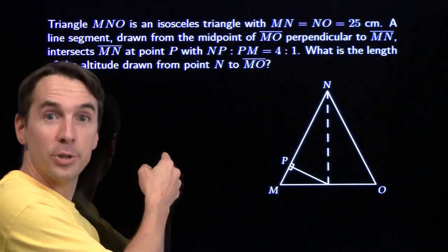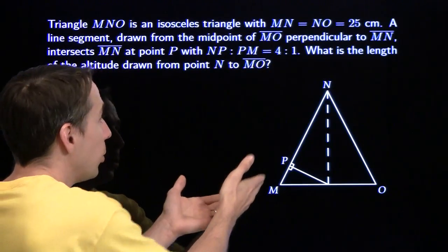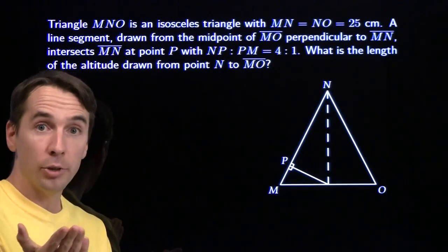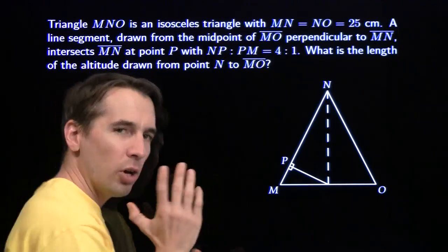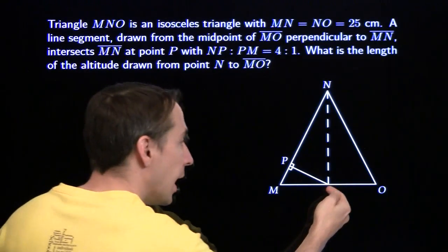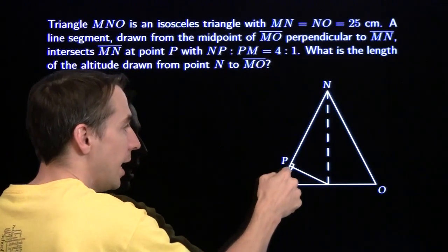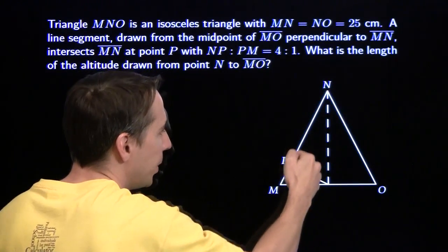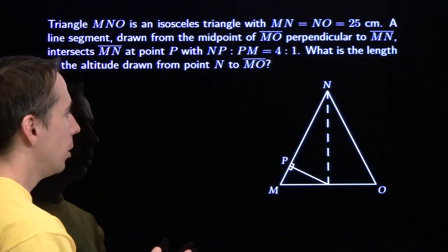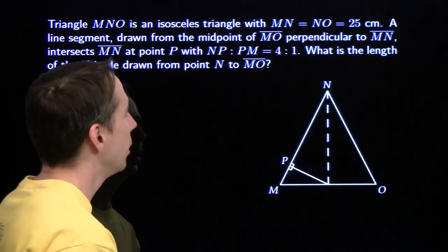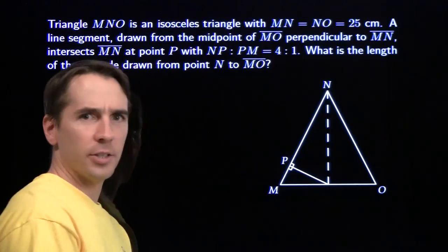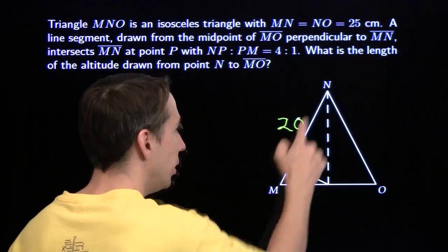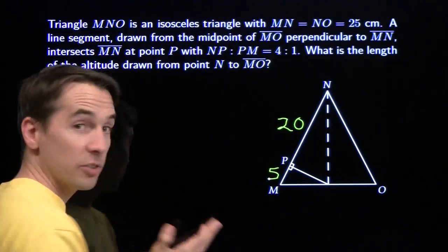Geometry. We're going to do some geometry now. Here we have an isosceles triangle MNO. We're told that MN equals NO — we know they both equal 25 centimeters. Then we draw a line segment from the midpoint of MO, perpendicular to MN, at point P, such that NP to PM is 4 to 1. That means NP is 4 fifths of 25, which is 20, and MP is just 5.